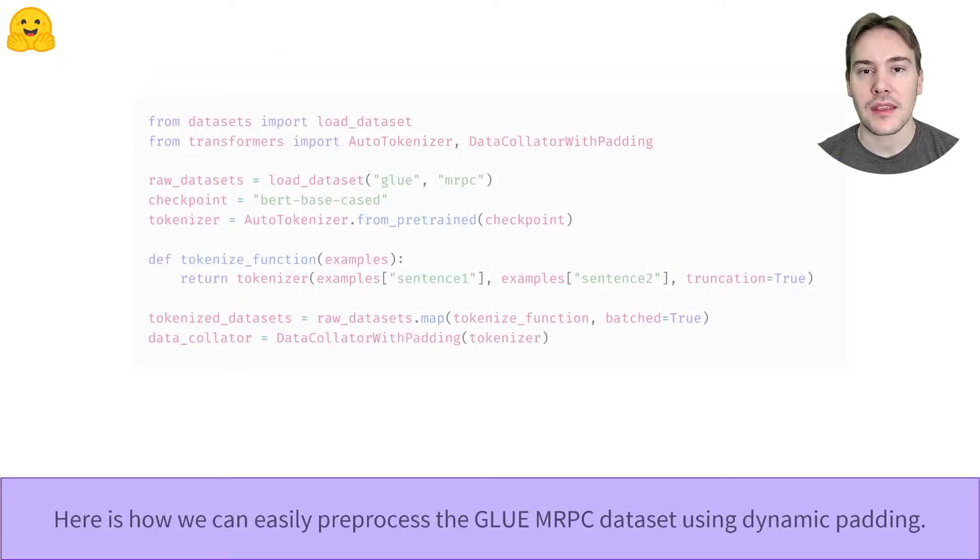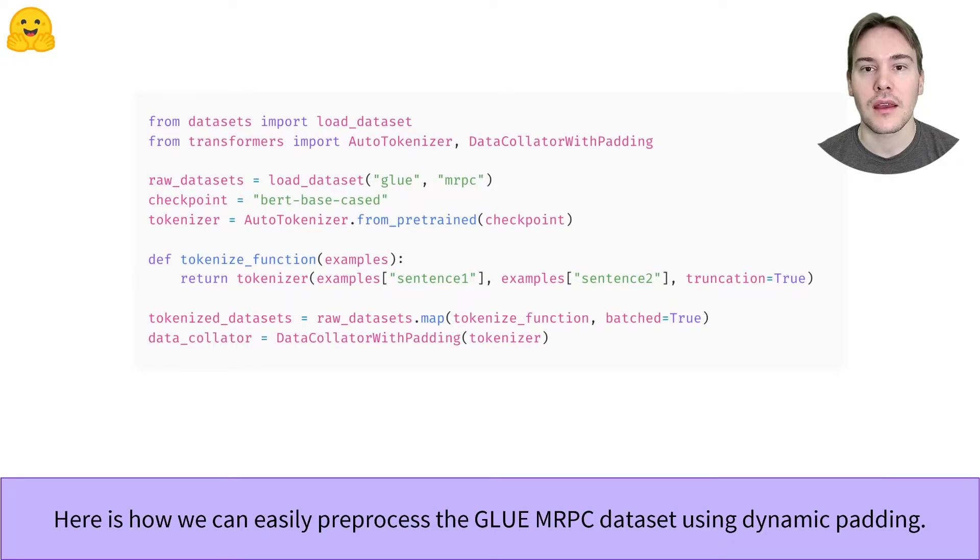We'll try this API on the MRPC dataset since it's relatively small and easy to preprocess. As we saw in the datasets overview video, here is how we can preprocess it. We do not apply padding during the preprocessing as we will use dynamic padding with our data collator with padding. Note that we don't do the final steps of renaming, removing columns, or set the format to Torch tensors. The Trainer will do all of this automatically for us by analyzing the model signature.